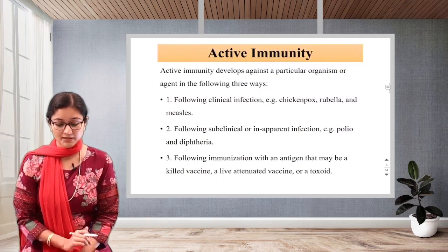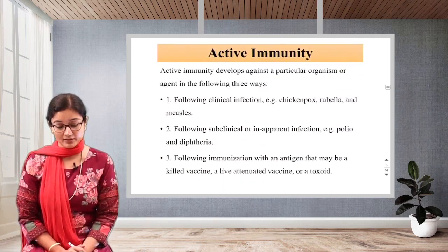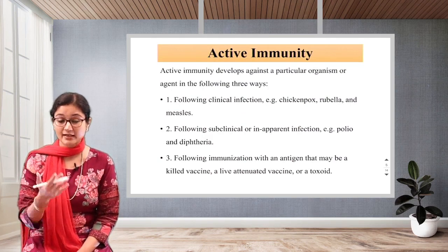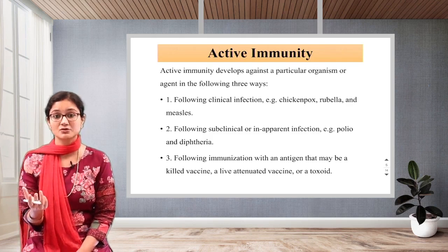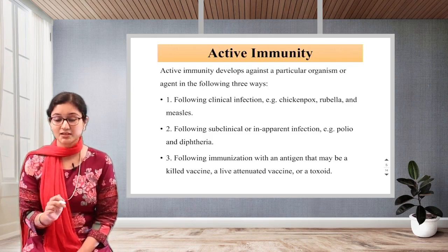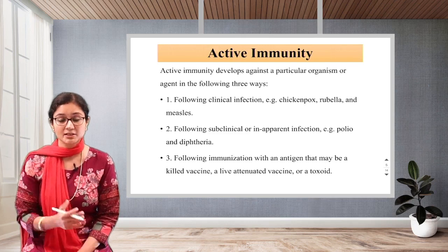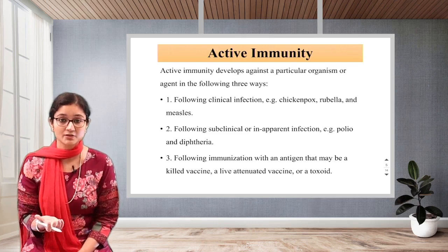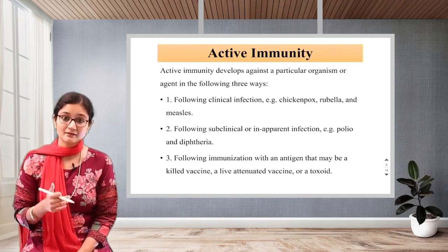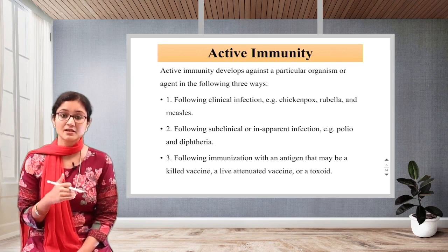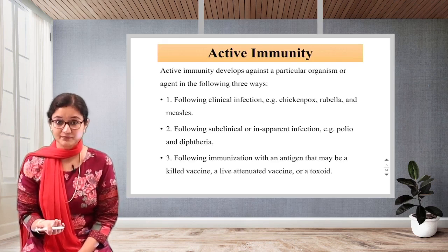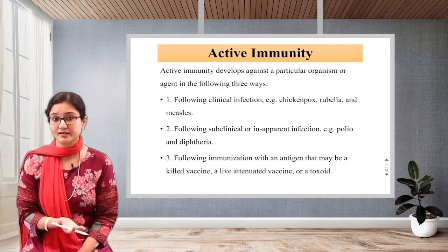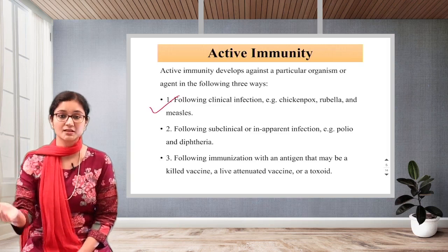Active immunity develops against a particular organism or agent in three ways. The first is following a clinical infection. For example, if a person is suffering from chickenpox, rubella, or measles, the body itself produces antibodies against it. Once affected, there is very little chance the person will get chickenpox again. So the first way is following a clinical infection — meaning an infection has occurred in the body.